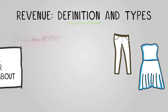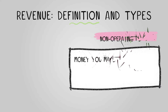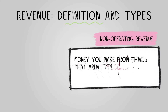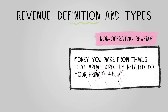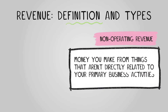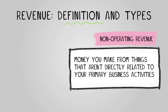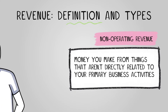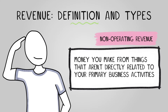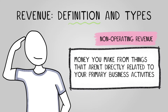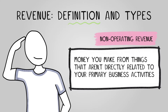Non-operating revenue is money you make from things that aren't directly related to your primary business activities. It's usually not as reliable, but it's still money. Examples include selling off old office furniture or investing the company's money in a way that brings dividends.